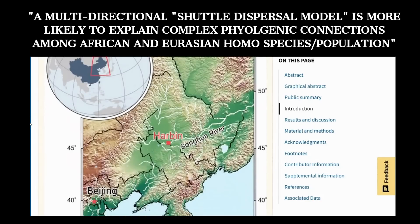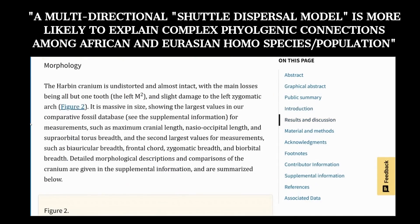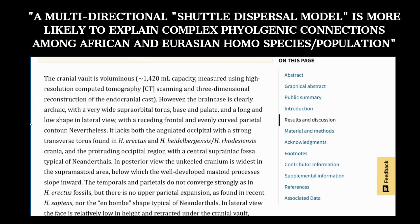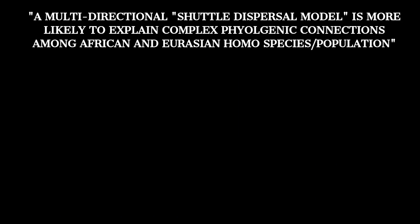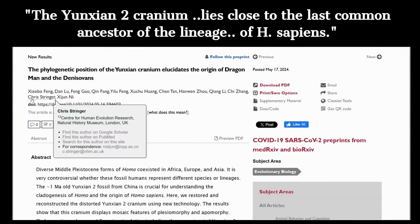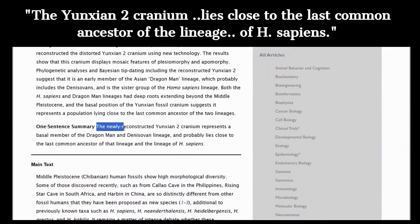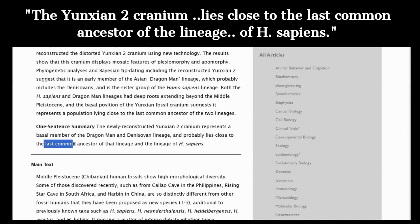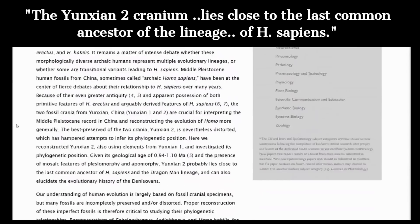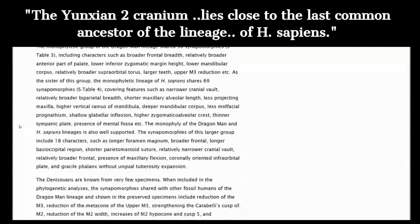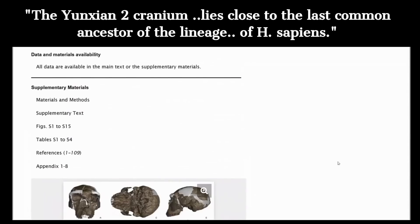Stringer also co-authored another paper stating that the one-million-year-old Chinese Yunxian 2 cranium lies close to the last common ancestor of Denisovans and Homo sapiens. A new study titled "The Phylogenetic Position of the Yunxian Cranium" hypothesizes that the newly reconstructed Yunxian 2 cranium represents a basal member of the Dragon Man and Denisovan lineage, probably lying close to the last common ancestor of that lineage and Homo sapiens. In other words, the Yunxian 2 skull may be the elusive last common ancestor, and its placement in China is a significant challenge to the out-of-Africa theory.